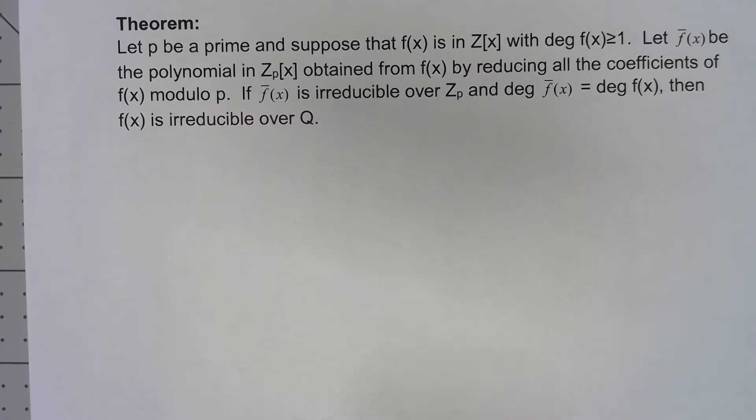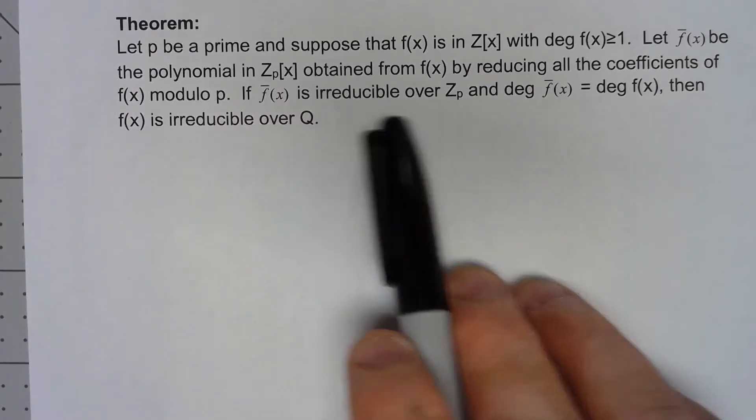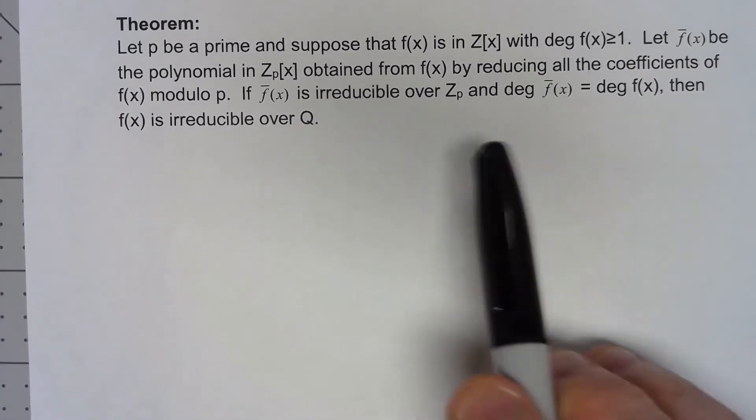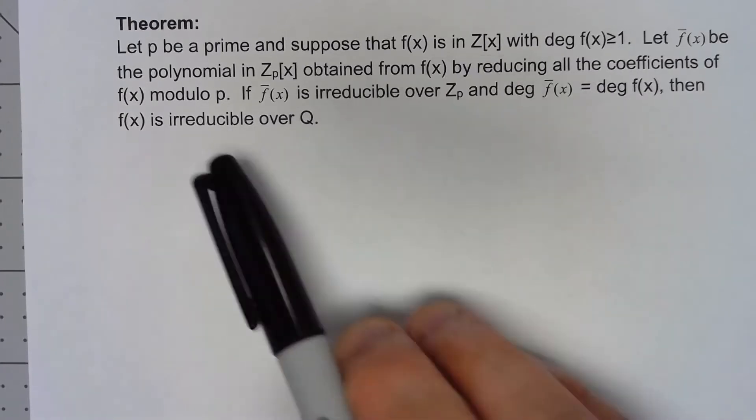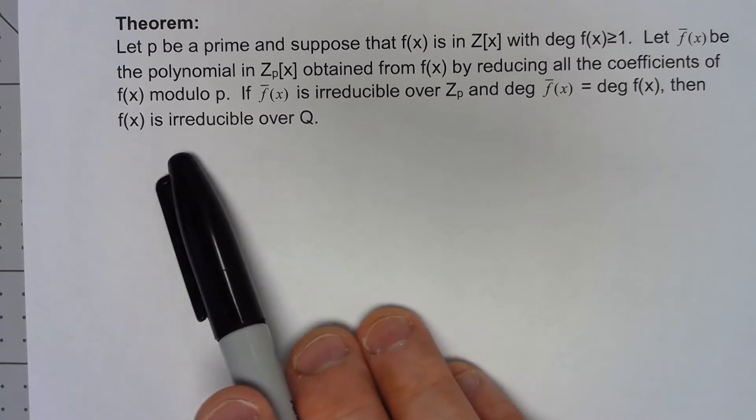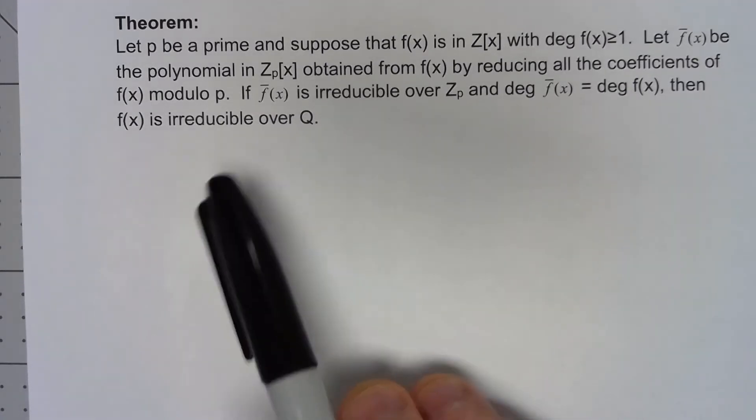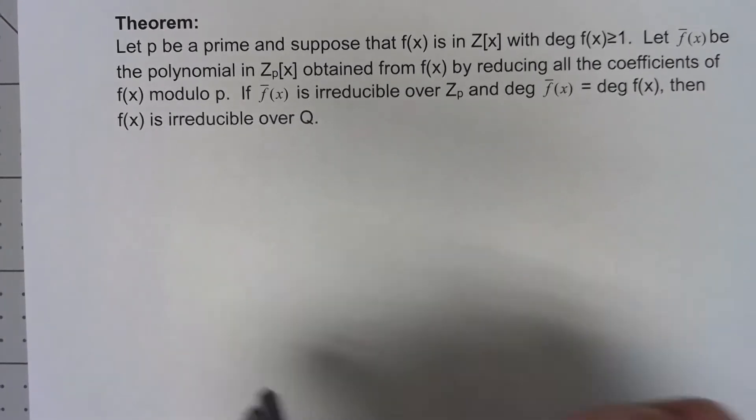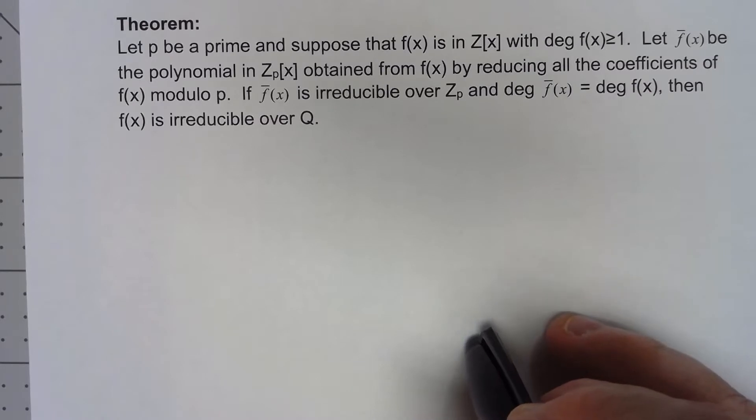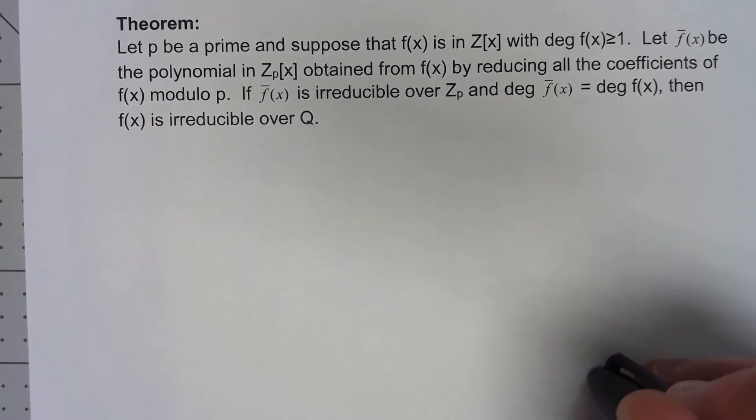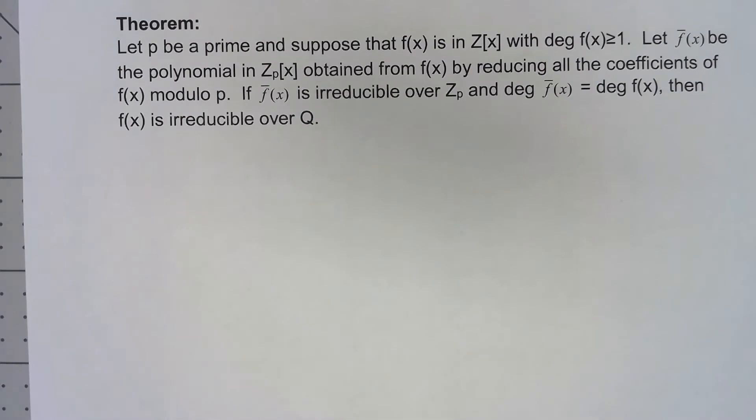If that polynomial is irreducible over the integers mod p and the degree of that polynomial matches the degree of the original polynomial, then we can say that polynomial is irreducible over Q. It's important to realize that we've shown that if it's reducible over Q then it's reducible over Z, so by contrapositive that means if it's irreducible over Z it must be irreducible over Q.